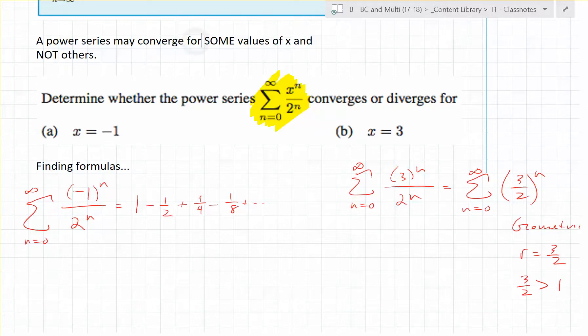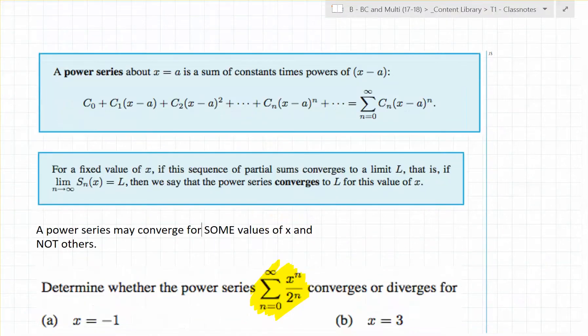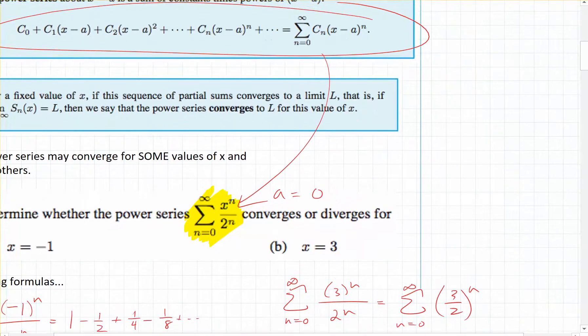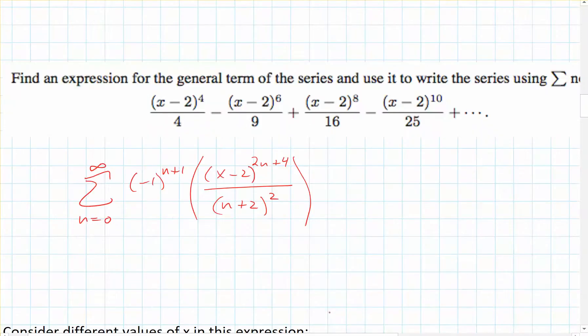Now, what is this centered around? There's something that's missing, kind of quote unquote missing, but not really. What term are you not seeing in there? It's 0. So the way you could rewrite this would be x minus 0 over 2 to the n. The constants can change.